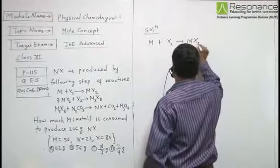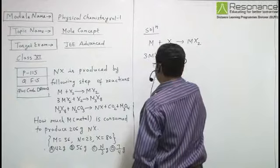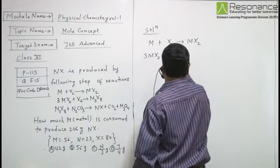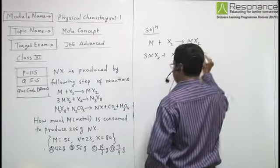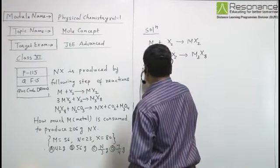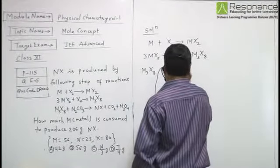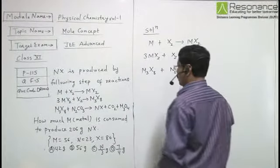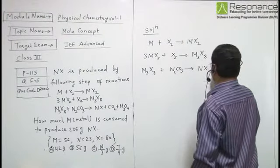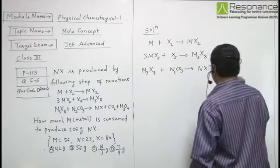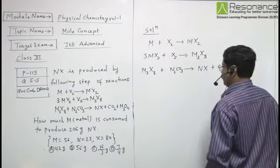First reaction is balanced, so no problem. Second is also balanced. And the third reaction, you have to balance this, because for chemical reaction based calculation, we have to balance the chemical reaction.